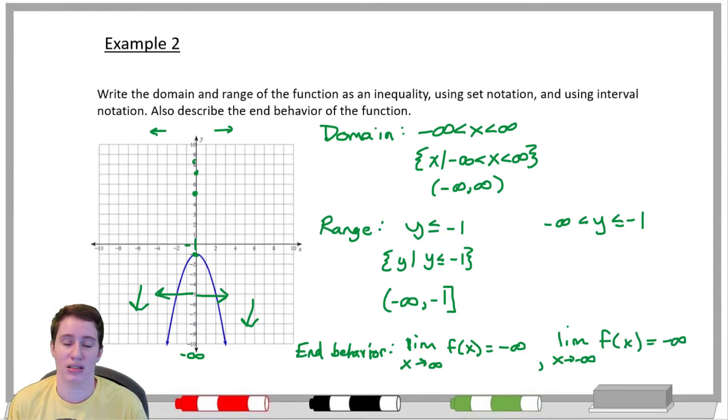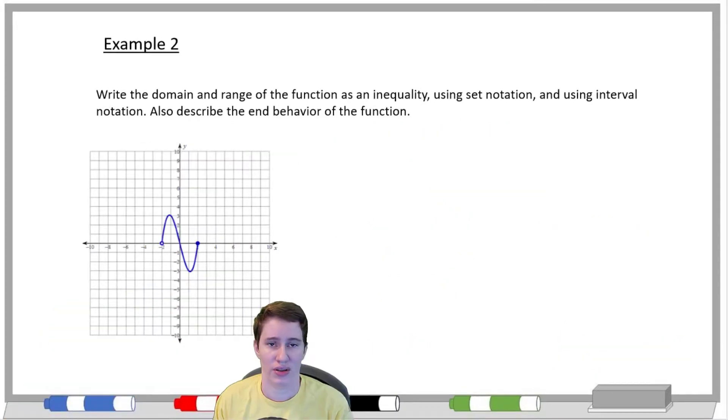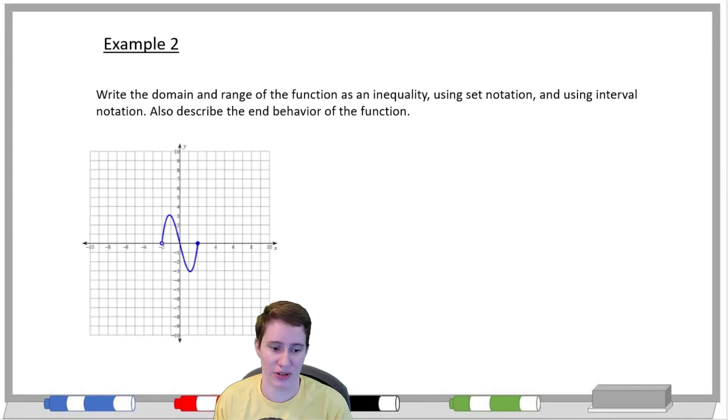For end behavior of the parabola: the limit as x approaches positive infinity of f(x) equals negative infinity, because as we go right the graph goes down. The limit as x approaches negative infinity of f(x) also equals negative infinity, because as we go left the graph also goes down.